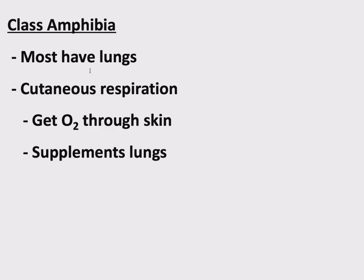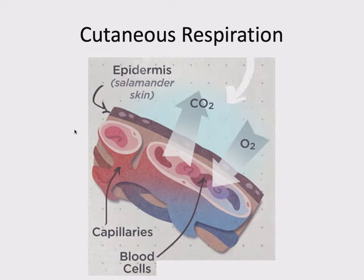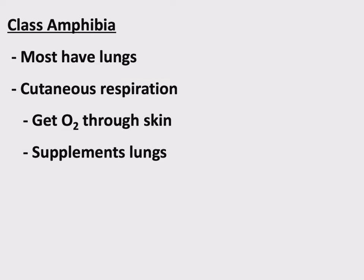Amphibians have kind of bad lungs, and their circulation is not great, so their efficiency in breathing is pretty terrible. To supplement their lungs, amphibians have something called cutaneous respiration. Their skin is particularly thin, and they are able to exchange gases — getting rid of CO2 and acquiring O2 — straight through their skin, through capillaries pressed up against their skin. That's cutaneous respiration: getting O2 through the skin.